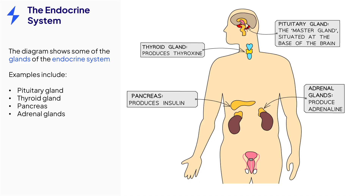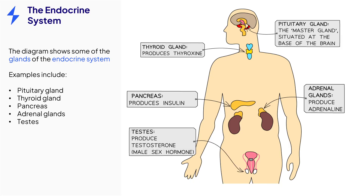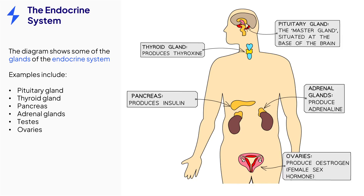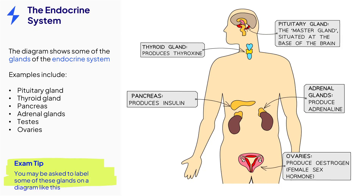The final glands you need to know about are those that release reproductive hormones. The testes in males release testosterone and the ovaries in females release estrogen. Both of these hormones control the secondary sexual characteristics that aren't present in a person from birth. Make sure you memorize the positions of these glands in the body because you may be asked to label this diagram in an exam.